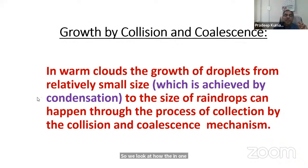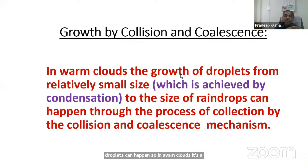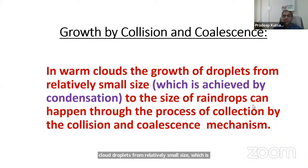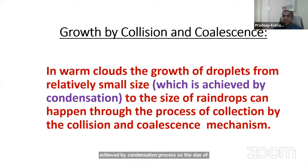In warm clouds, the growth of cloud droplets from relatively small size achieved by condensation to the size of raindrops can happen through the process of collection by the collision and coalescence mechanism.